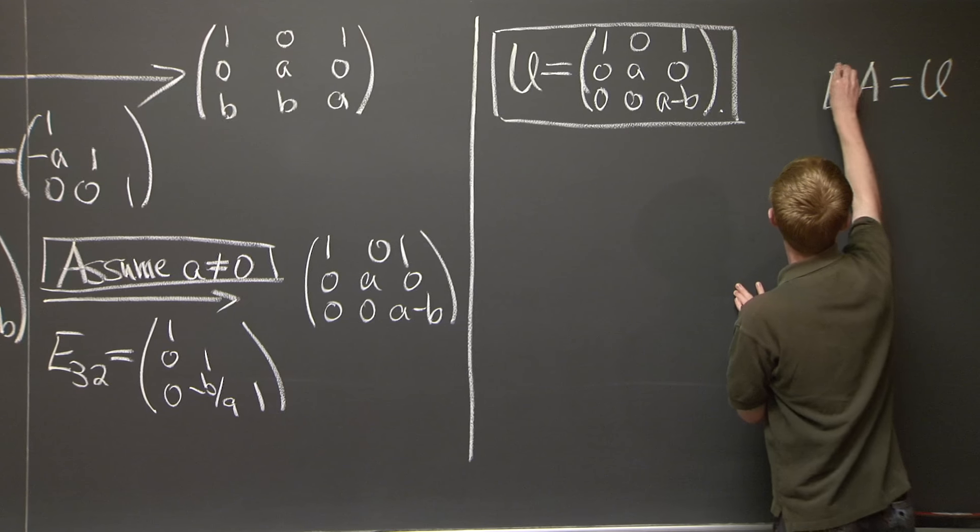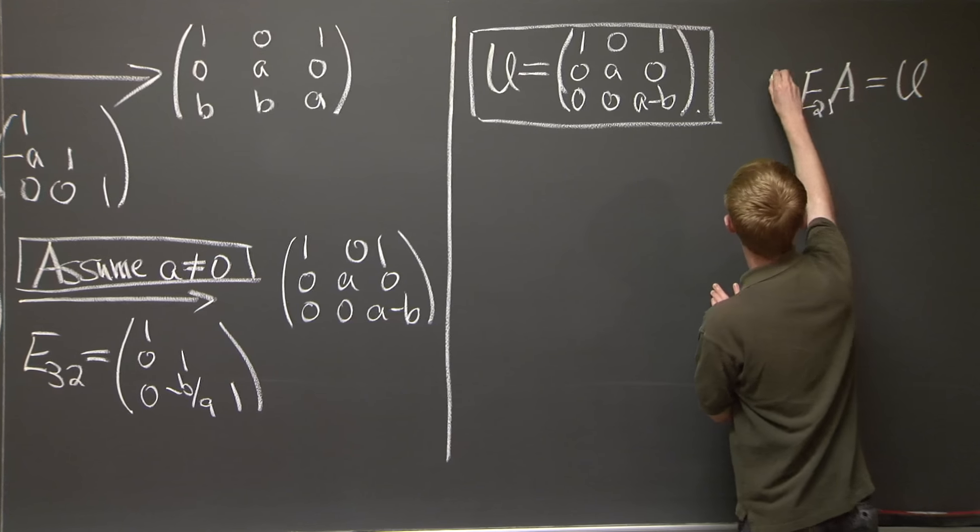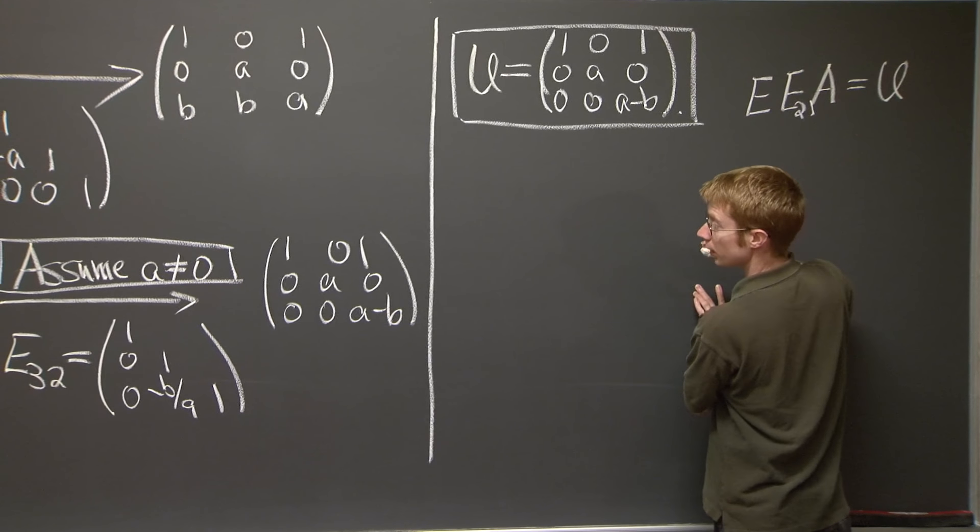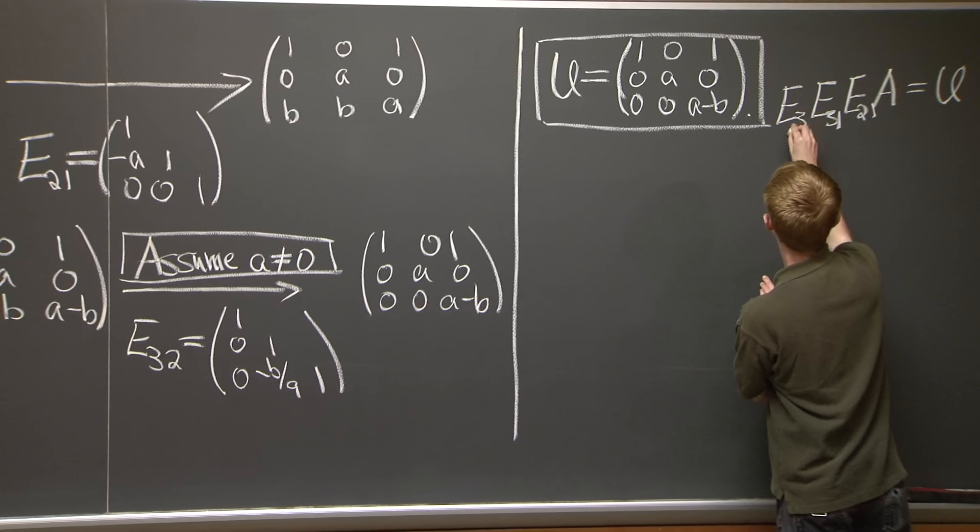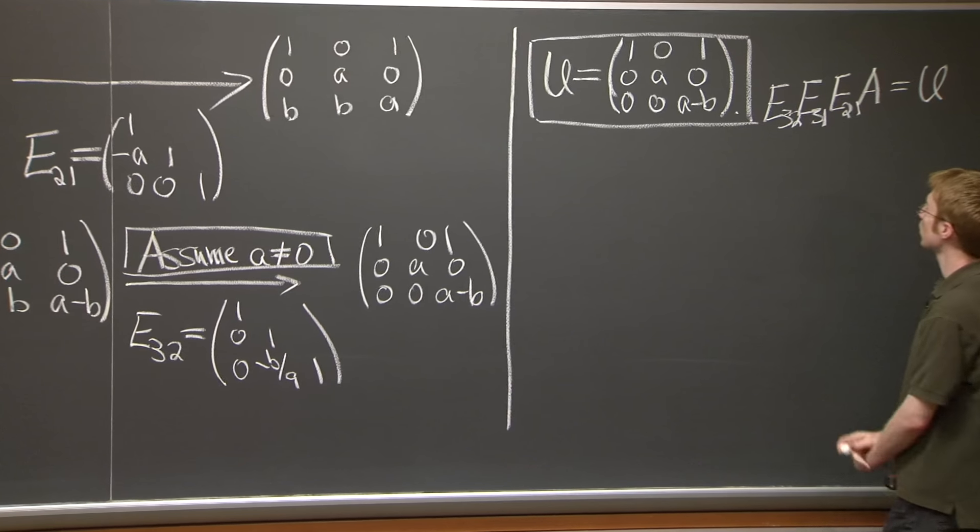And how did we do that? Well, we multiply it on the left by all of these elimination matrices: E_{2,1}, E_{3,1}, and E_{3,2}. Sorry if that's scrunching together there.